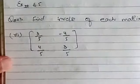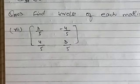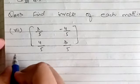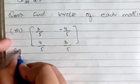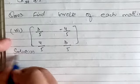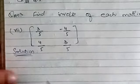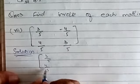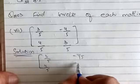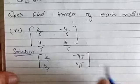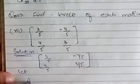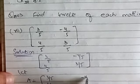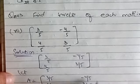The question has given the name matrix A, so we write it with the name matrix A. Let's start with the solution. The matrix A is: 3/5, 4/5, -4/5, 3/5. Let A equal this matrix.